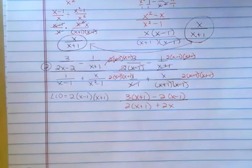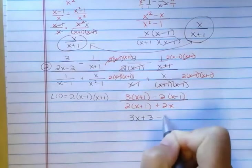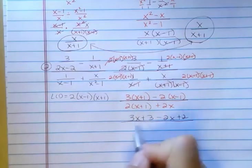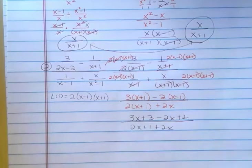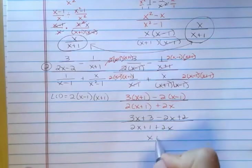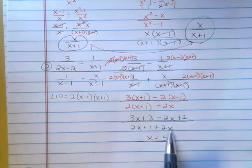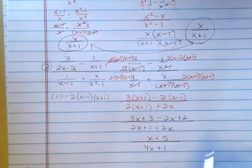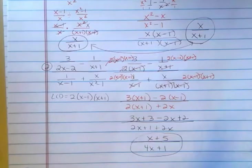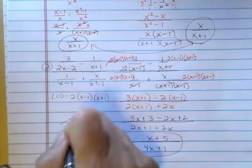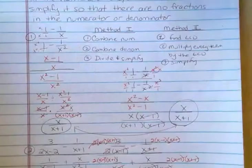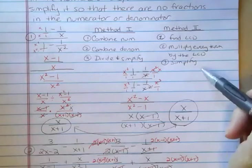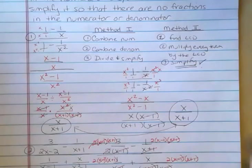If I multiply out the top, I get 3x plus 3 minus 2x plus 2. And on the bottom, 2x plus 1 plus 2x. Now I'm going to continue simplifying: 3x minus 2x is x, and 3 plus 2 is 5. On the bottom, 2x plus 2x is 4x plus 1. I can't factor anymore and I can't cancel anything else, so that is my answer. My answer is simplified because there are no fractions in the numerator and no fractions in the denominator. In this one I used method 2 — find the least common denominator, multiply every term by it, and then simplify. And in this case, the simplifying is the difficult part.